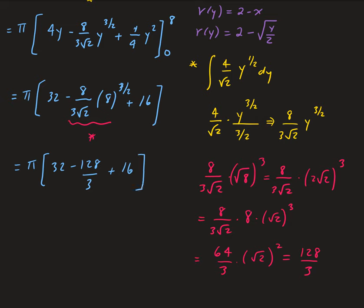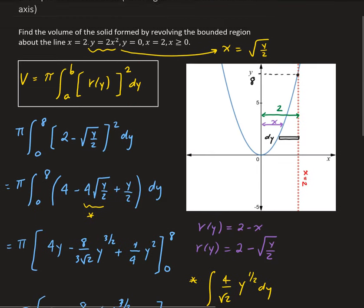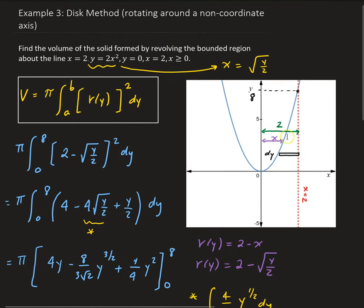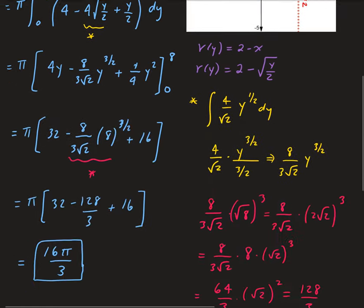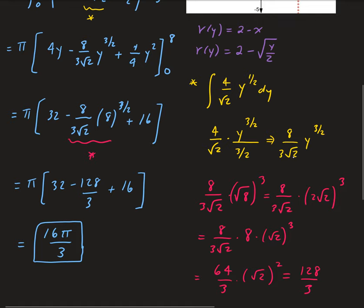That gives us 16π over 3. So that's the volume of this region — the region bounded by y equals 2x squared, x equals 2, and the x-axis, revolved around x equals 2. If this were an application problem, the answer would be 16π/3 cubic units.